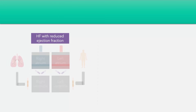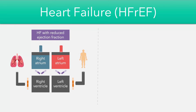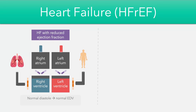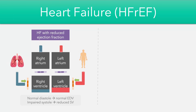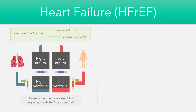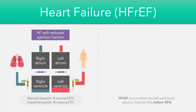In heart failure with a reduced ejection fraction, diastole occurs as normal so there's full ventricular filling and a normal end diastolic volume. However, a problem arises during ventricular systole — when the ventricles contract there's poor ejection of blood into the arteries, resulting in a reduced stroke volume. The left ventricle has more blood at the end of systole. Because stroke volume has decreased while end diastolic volume remains the same, the ejection fraction therefore decreases.